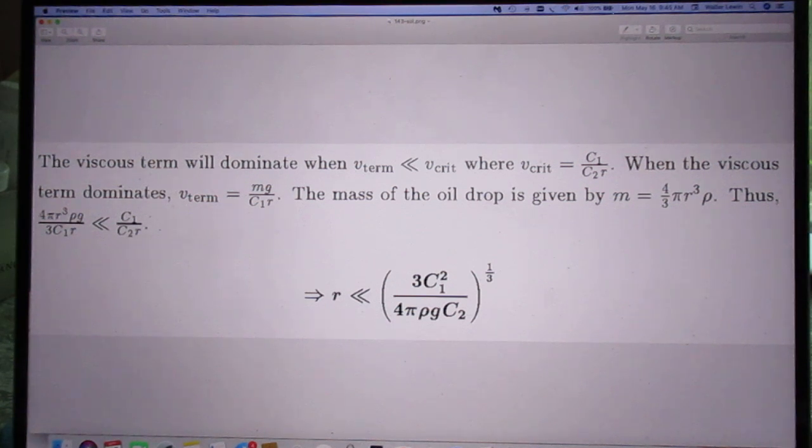3c1 squared divided by 4 pi rho g c2 and the whole thing to the power 1 third.